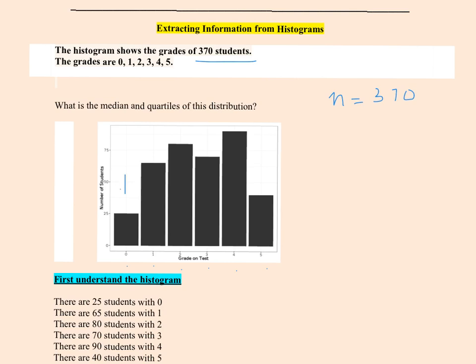Let's look at the first bar. The score is 0. The y-axis of a histogram gives the counts, so it's about 25 students who scored a 0 on the test. The second bar tells us approximately 65 students scored a 1. And looking at the third bar, that's about 80 — so 80 students scored a 2 on the test.